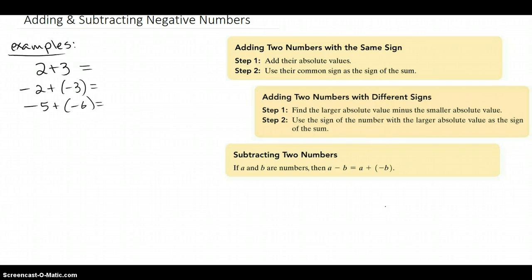Let's do that. Here I have three examples for the first box. 2 plus 3, we know that is 5. We add the absolute values 2 and 3. Then they're both positive, so that's why it's a positive 5.